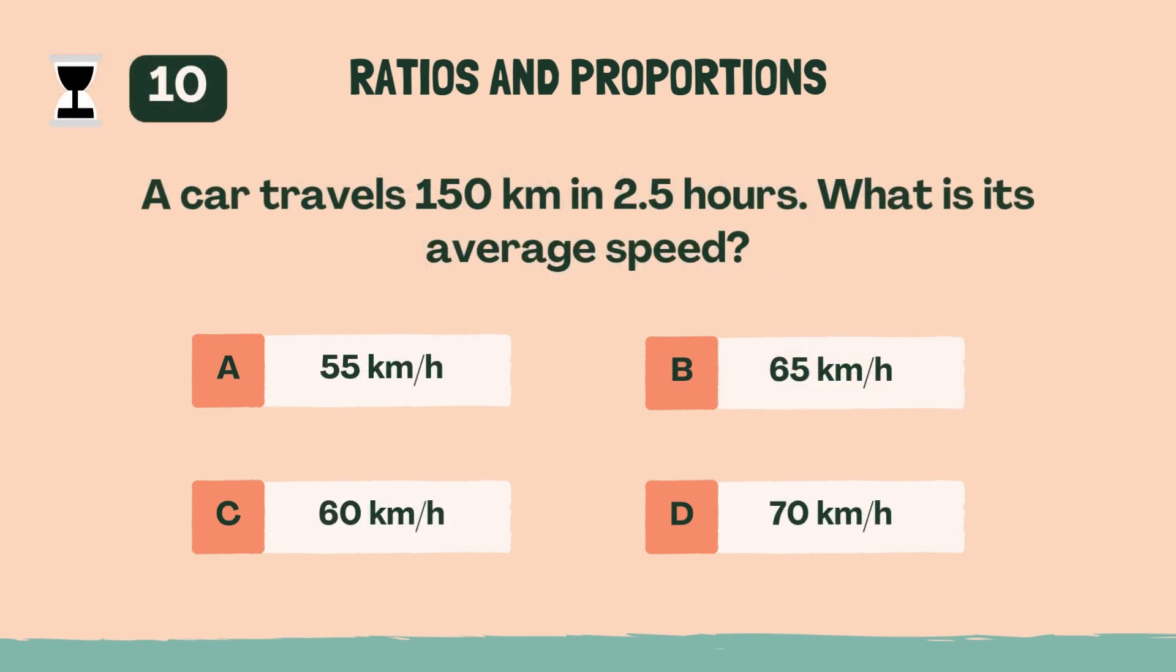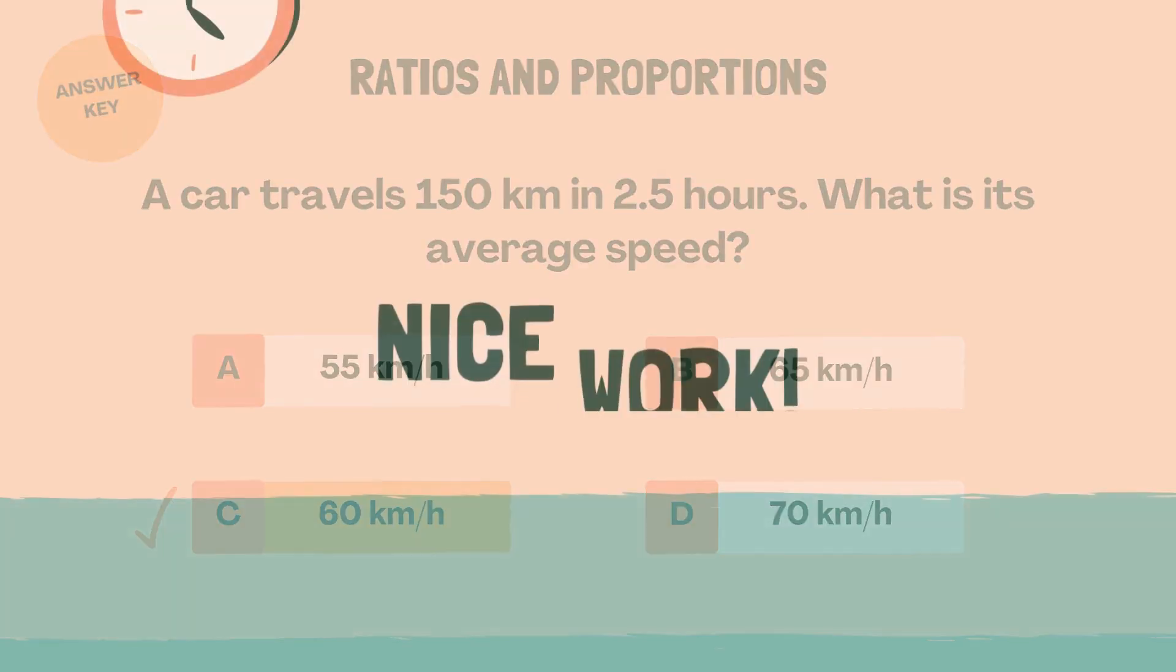A car travels 150 kilometers in 2.5 hours. What is its average speed? C, 60 kilometers per hour. Nice work. Time for the next category.